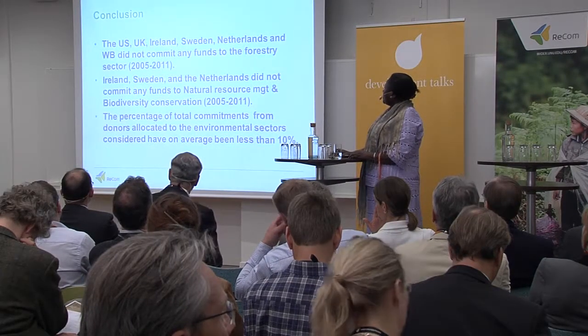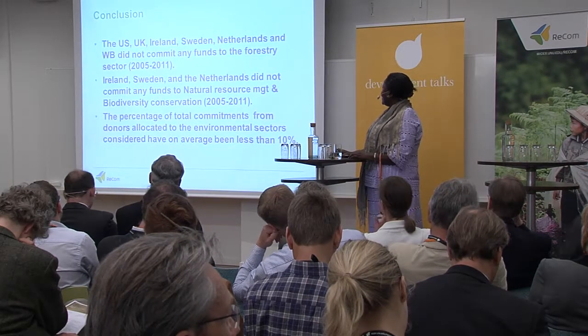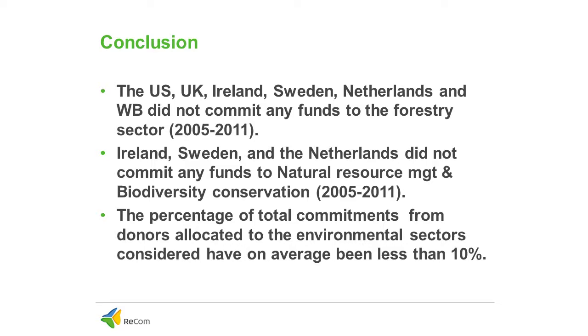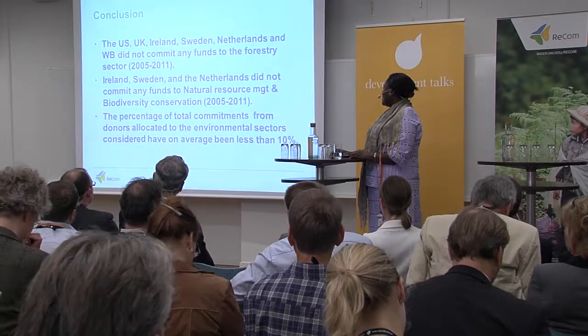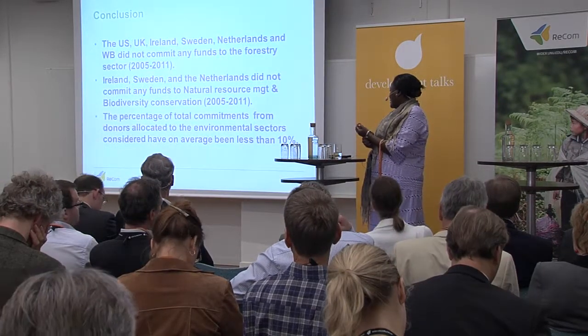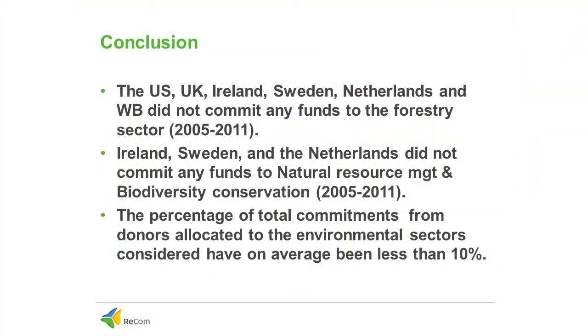In conclusion, during the period considered, the UK, US, Ireland, Sweden, and Netherlands did not commit any funds to the forestry sector. Ireland, Sweden, and the Netherlands did not commit any funding to natural resource management and biodiversity conservation. On average, the percentage of commitments to environmental sectors as a share of total aid was very small — in most cases less than 10%, and specifically for livestock and fisheries, the percentages were less than 1%.